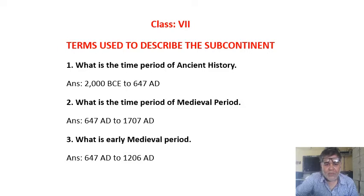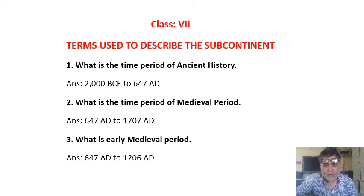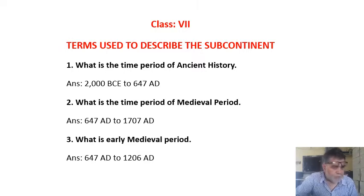What is the time period of medieval history? Medieval history started from 647 AD, after the death of Harshvardhan, to 1707, the date of Aurangzeb. This time period is called medieval history.